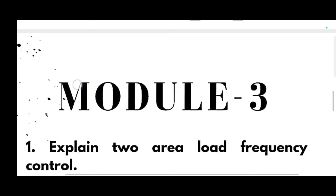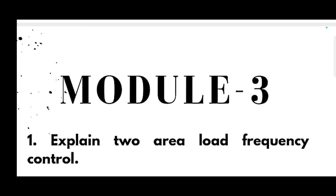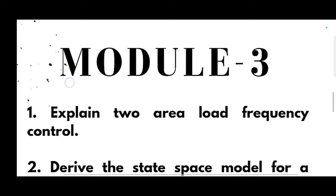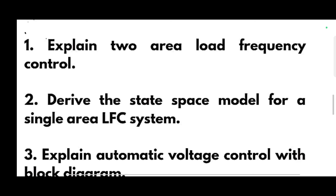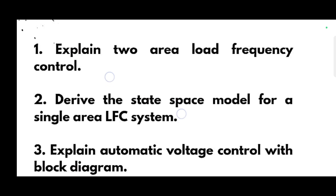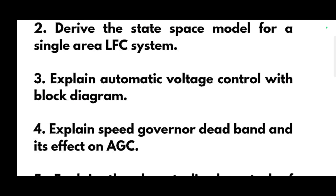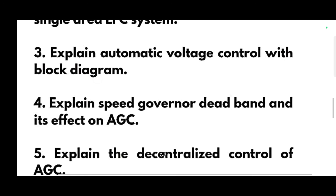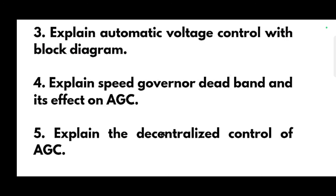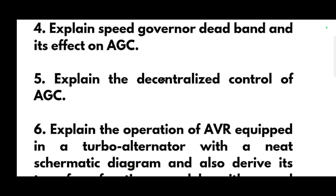For numericals, refer to 18EE81 or 17EE81 papers. In Module 3: explain two-area load frequency control — again a super important question; derive the state space model for a single-area LFC system; explain automatic voltage control with block diagram; and explain speed governor dead band and its effect on AGC.